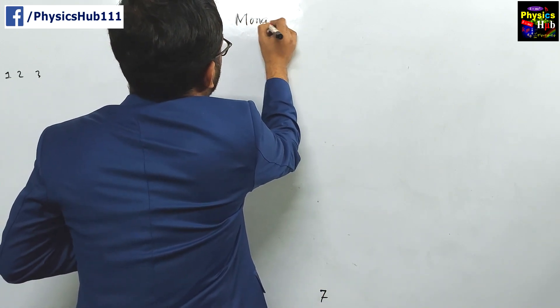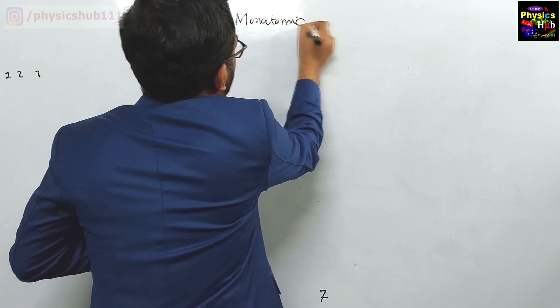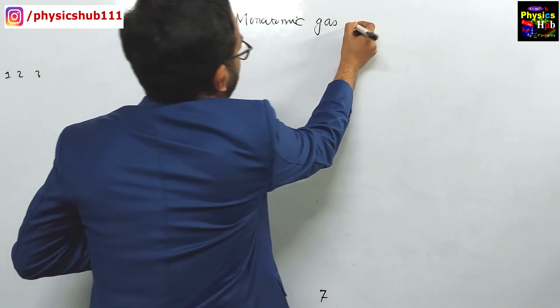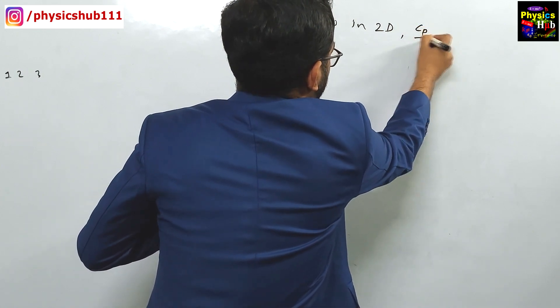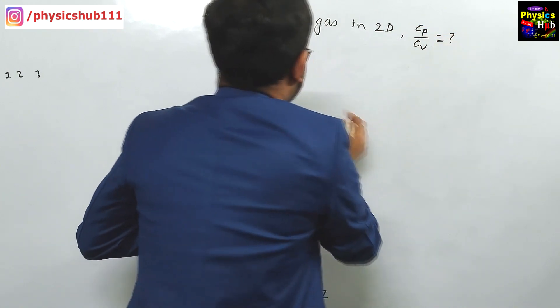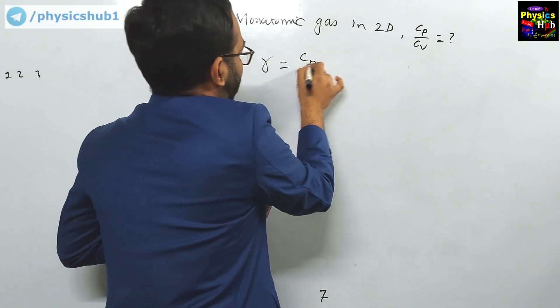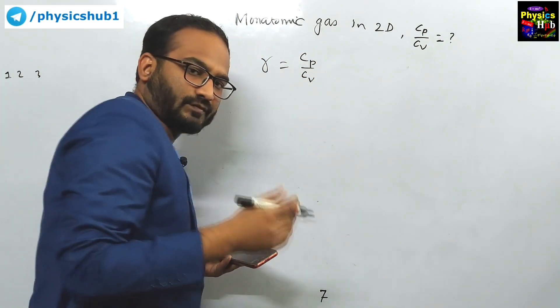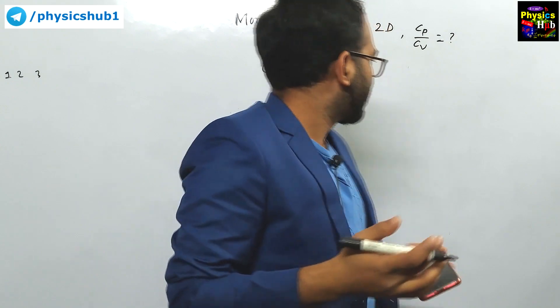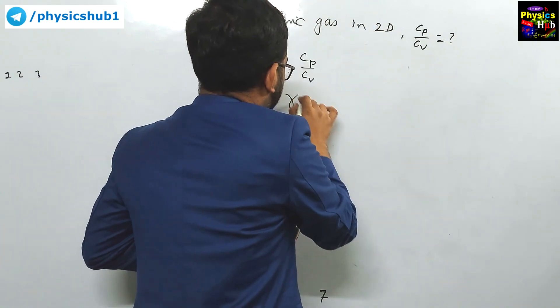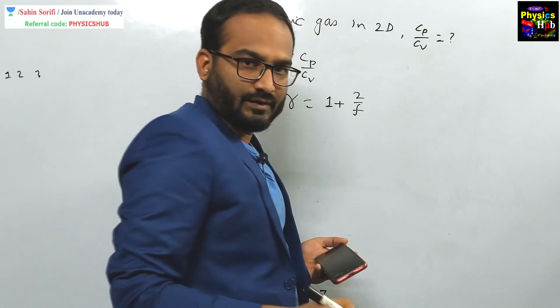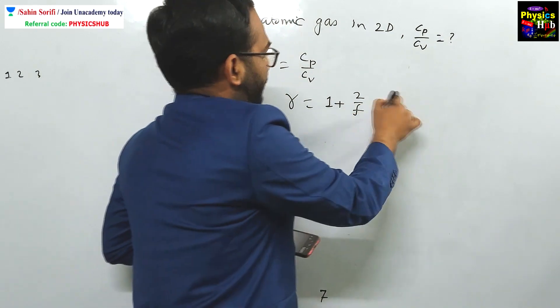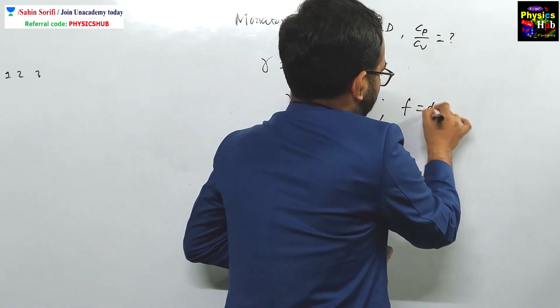What is given? You are given a monoatomic gas. Monoatomic gas in two dimensions, you have to find out the ratio of Cp and Cv, means gamma value. You know gamma is equals to Cp by Cv. And we know a relation between gamma and the degrees of freedom: 1 plus 2 by F. What is F here? F is known as the degrees of freedom.